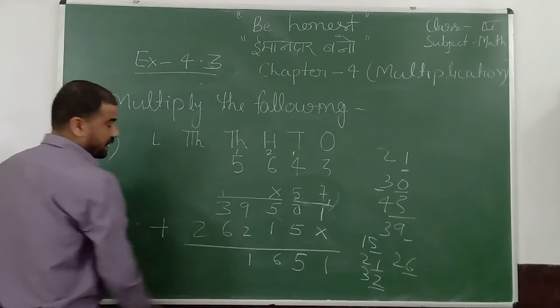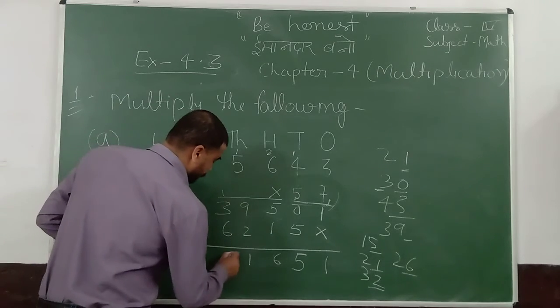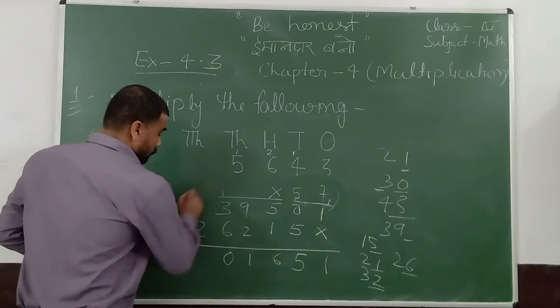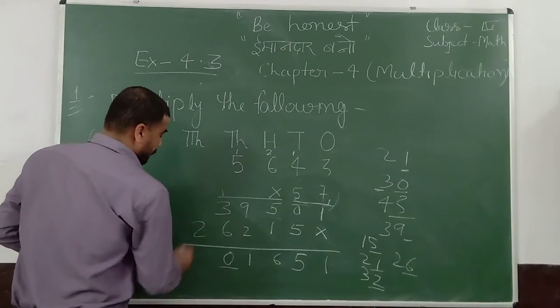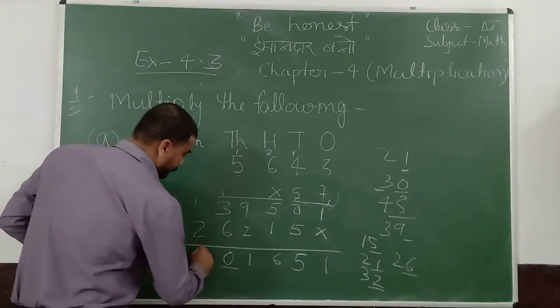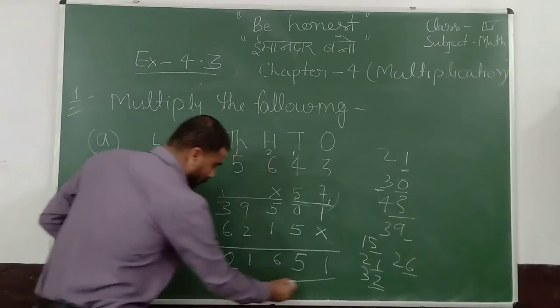1 plus 3 is 4. 4 plus 6 is 10. Put 0 here. And 1 is carrying. 1 plus 2 is 3. So that is the product of this multiplication.